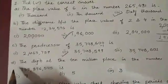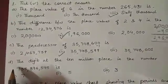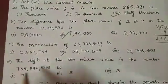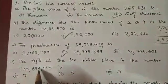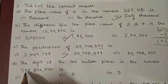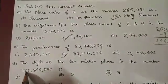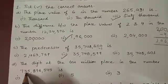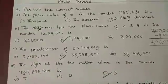Next, the digit at 10,000,000 place in the number 735,896,545 is. 10,000,000 place, this is the 10,000,000 place, and the digit is 3, so the right answer is 3.